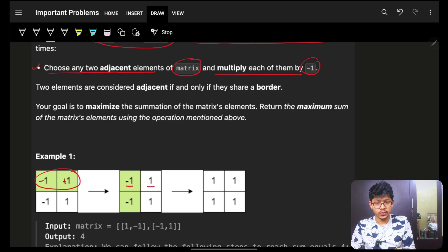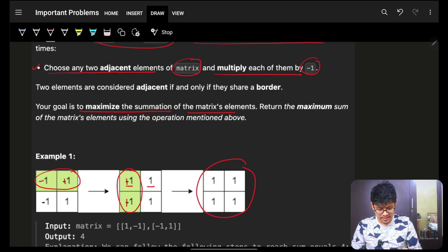So, this became minus 1, this became plus 1. Now, choose these two. It became a plus 1, plus 1. Okay. These two became plus 1, plus 1. Ultimately, my goal, maksat, is to get the maximum summation of the final matrix. As you can see, the summation is 4. Which is the maximum possible summation which I could get.